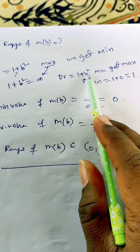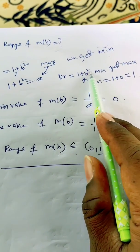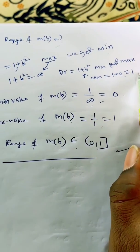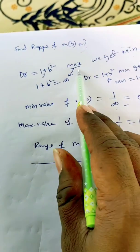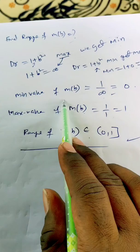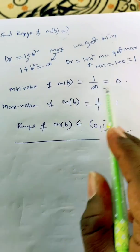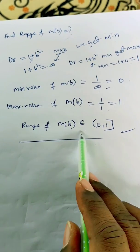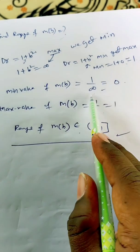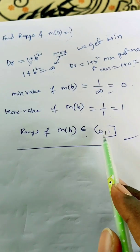The minima is when b² = 0, so 0+1 = 1. The complete denominator minima is 1 and maxima is infinity. So the minimum value of m(b) will be 1/∞ = 0. Maximum value of m(b) will be 1/1 = 1. The range of m(b) will be [0,1].